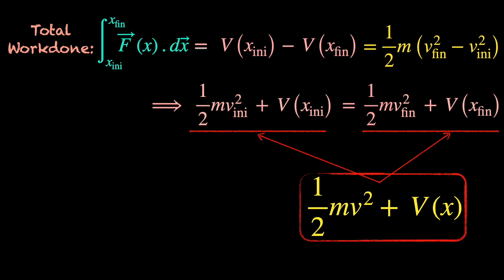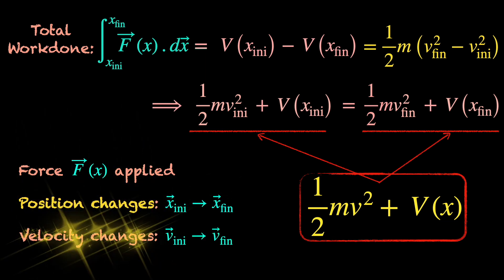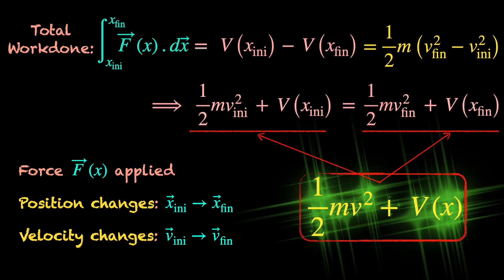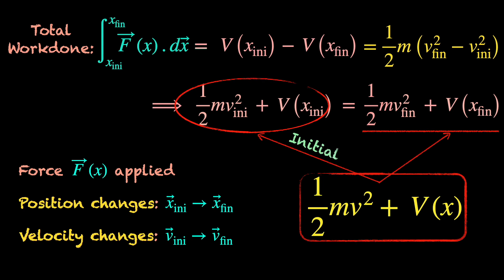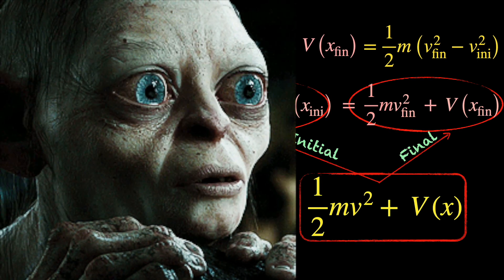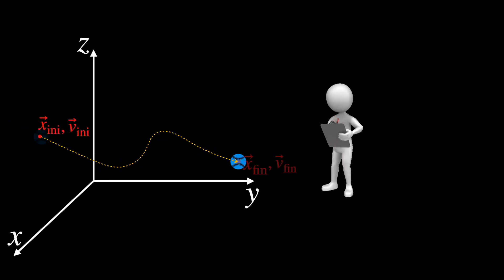So due to the application of force, the object moves from the initial location to the final location and its velocity changes from the initial value to the final value. Both the position and velocity of the object change, but somehow the value of this quantity half m v squared plus v of x as a whole with the initial position and velocity is the same as its value with the final position and velocity. Can it be the same only at the initial and final points and something else in between? Not really, because the initial and final positions and velocities have nothing special.